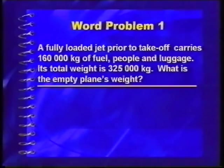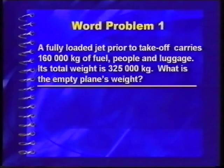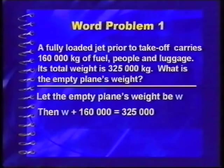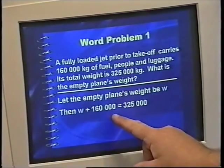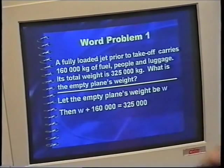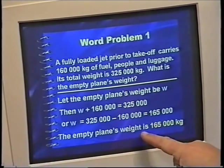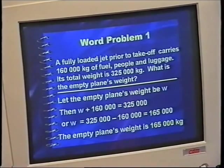A fully loaded jet prior to takeoff carries 160,000 kilograms of fuel, people and luggage, and its total weight is 325,000 kilograms. What is the empty plane's weight? We let the empty plane's weight be W. Then W plus 160,000 equals 325,000. Solving by transposition gives W equal to 165,000. The weight of the empty plane is 165,000 kilograms.